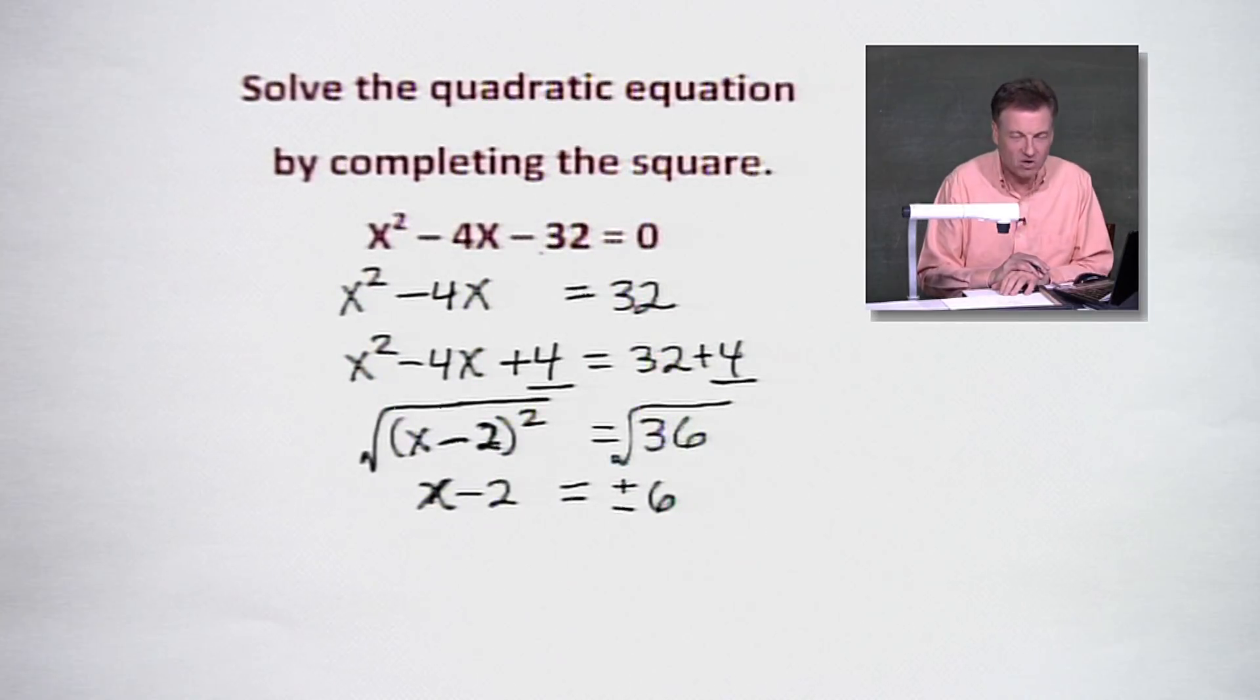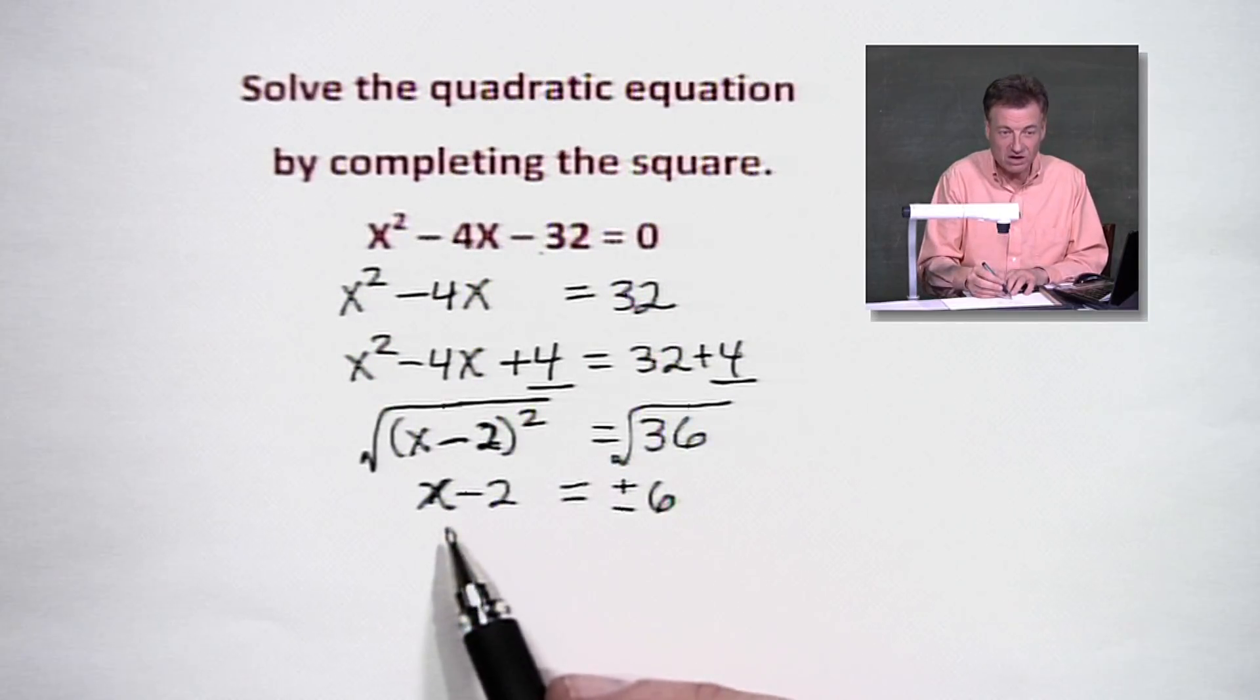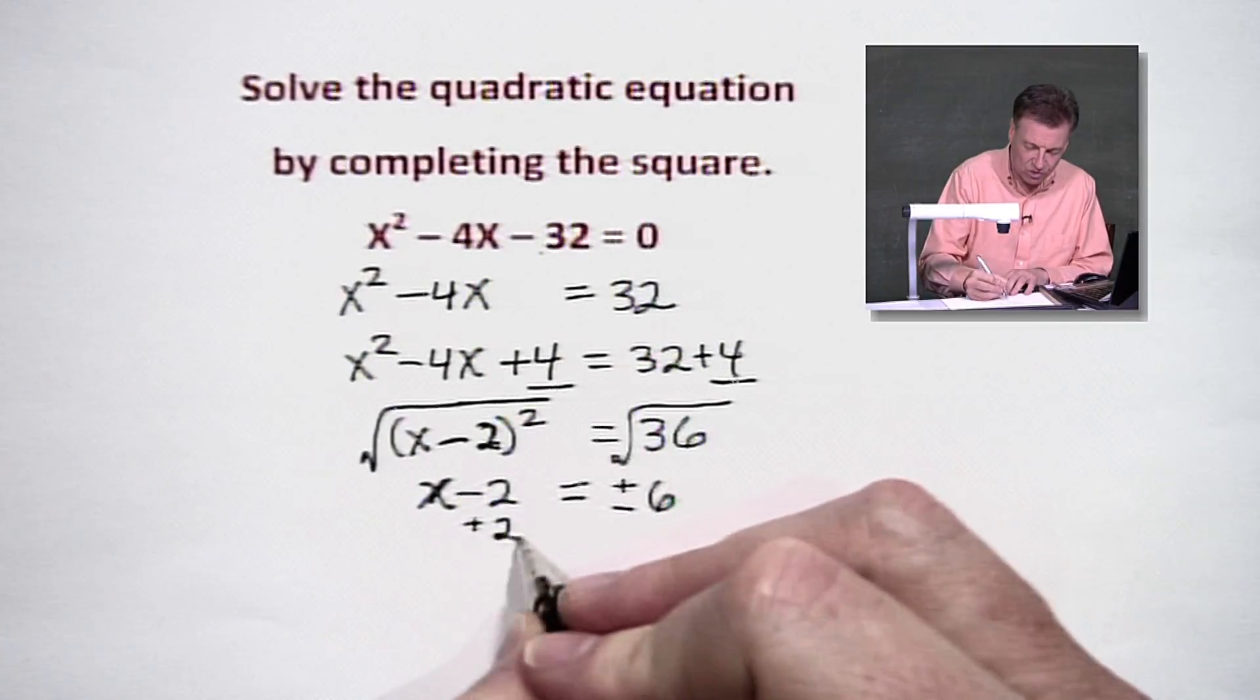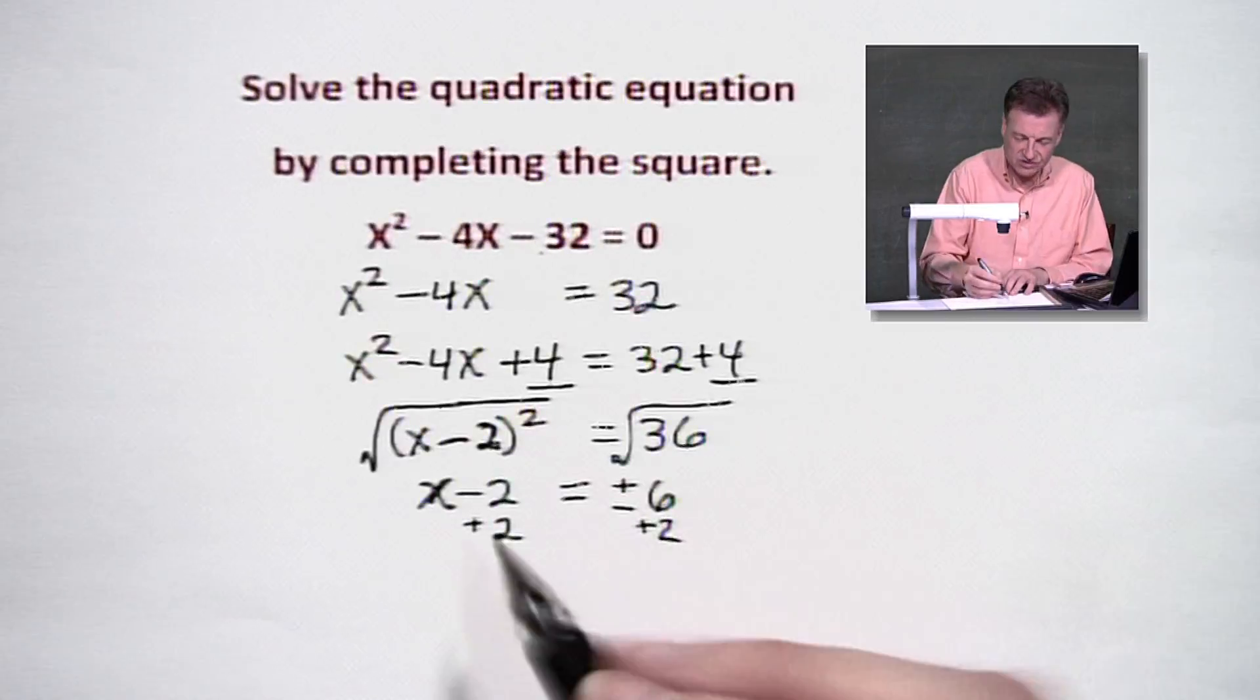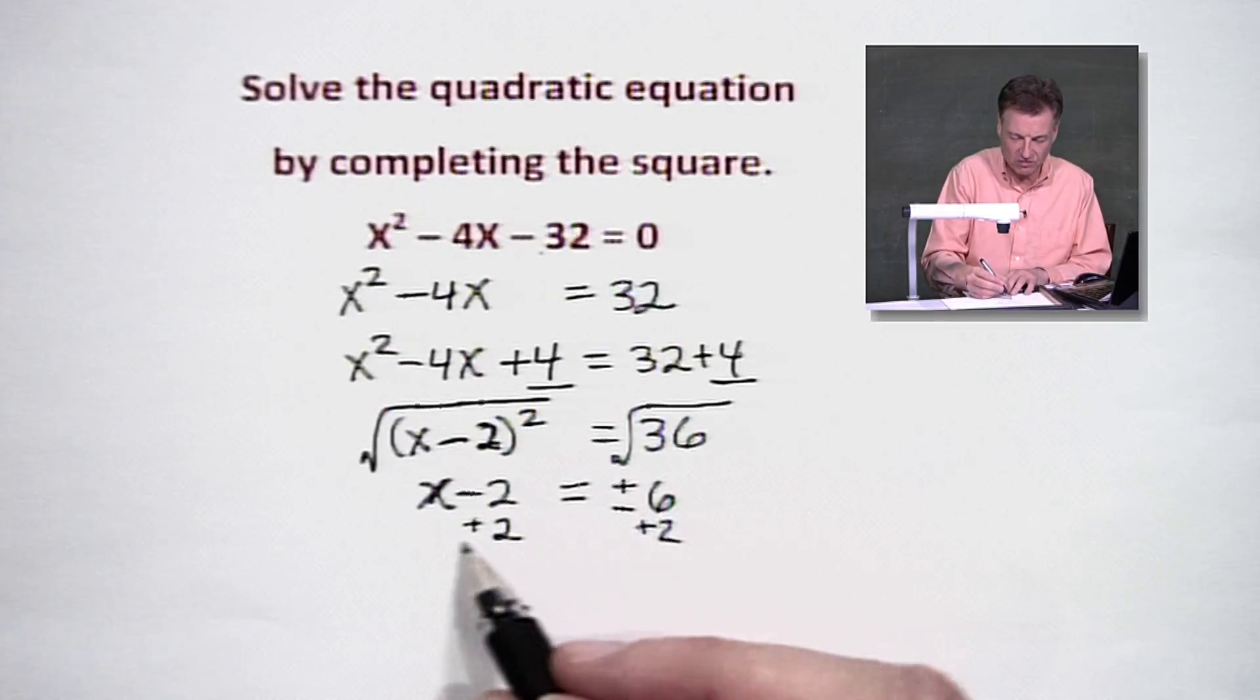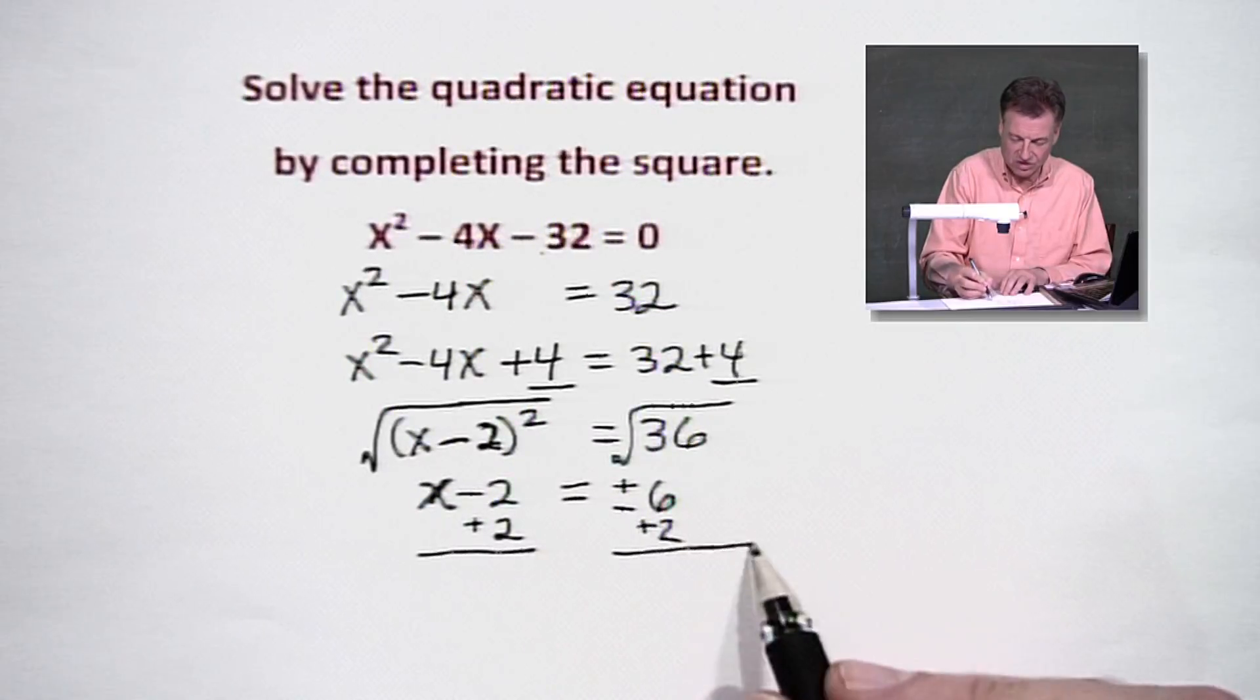So where are we going to go from here? We're going to get x by itself, and we're real close to it. Let me have a little room there. We're going to add 2 to both sides. Why did I choose that? Because we've got a minus 2. I need to move it to the right. So whatever we do to the left, we're going to do it to the right.